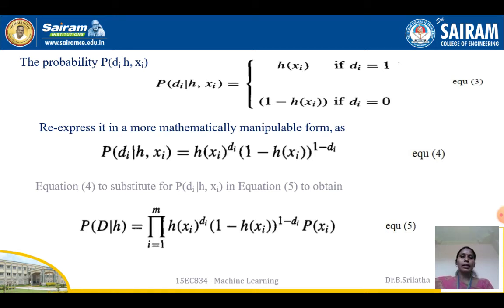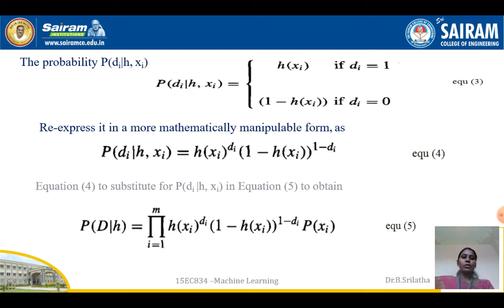We can find P(di | h, xi): when di = 1, the probability is h(xi); when di = 0, the probability is 1 - h(xi). Re-expressing this in a mathematically compact form, P(di | h, xi) = h(xi)^di * (1 - h(xi))^(1 - di), which evaluates to the correct value based on whether di is 1 or 0. This is equation number 4.